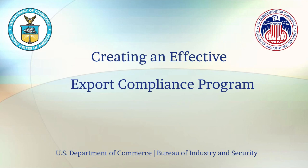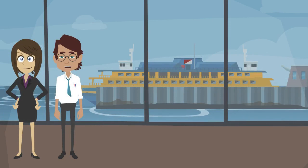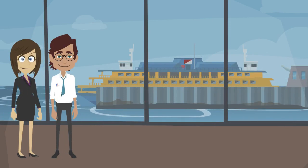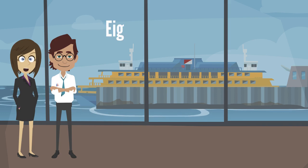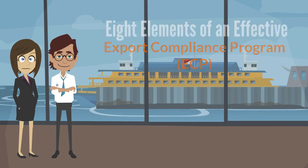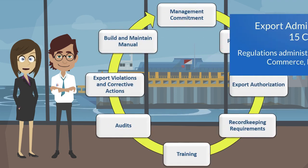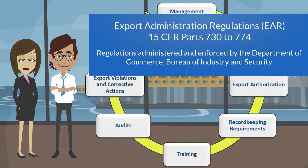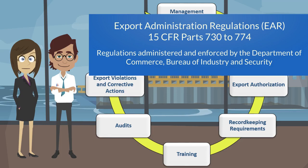The next scene has a female character and male character standing next to each other in a room. Hello and welcome to the world of export compliance. In this video, we're going to introduce you to the eight elements of an Effective Export Compliance Program, or ECP for short. BIS developed these elements to assist organizations in complying with the EAR — Export Administration Regulations, 15 CFR Parts 730-774 — administered and enforced by the Department of Commerce, Bureau of Industry and Security.